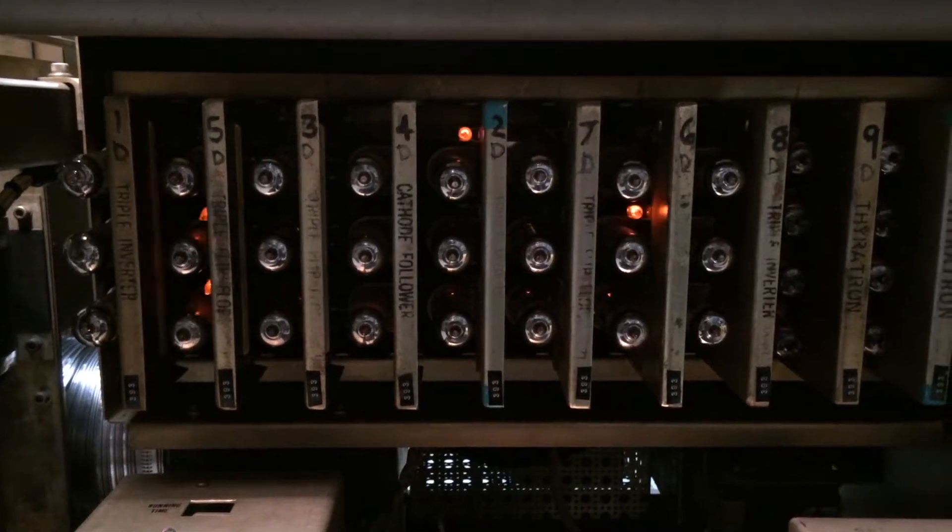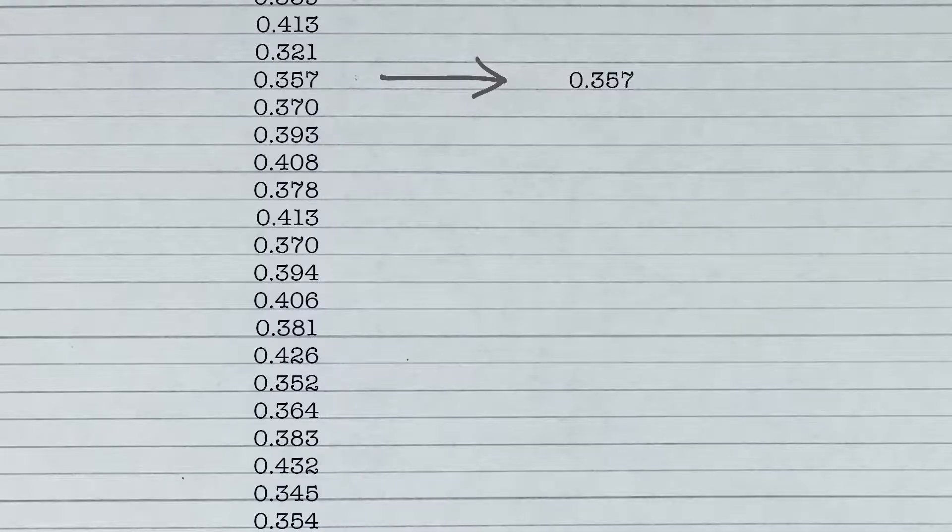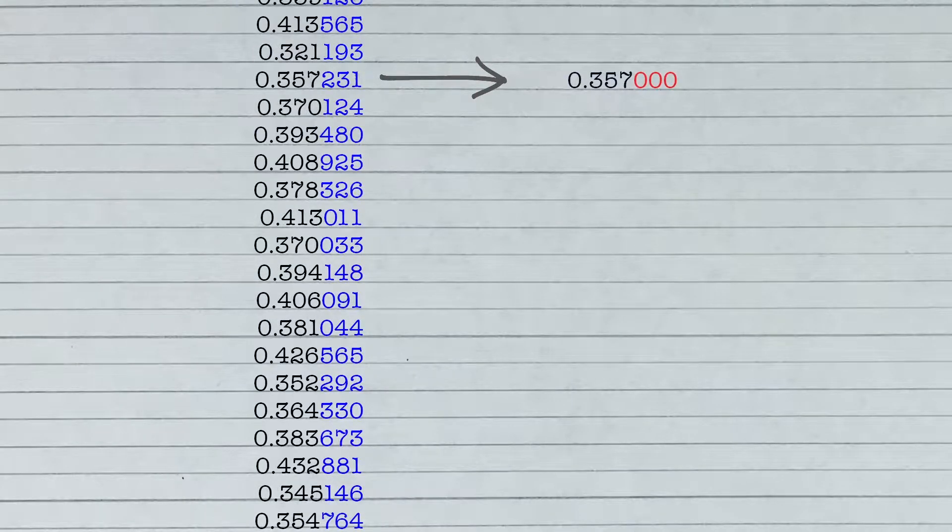At first, Lorenz thought the computer was malfunctioning, but he eventually found the source of the error. While the computer's memory stored numbers with six decimal places, it printed them with only three decimal places, so the values he entered contained tiny errors.